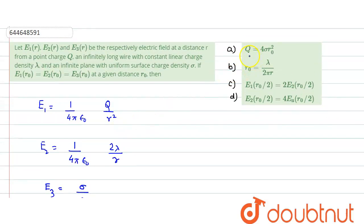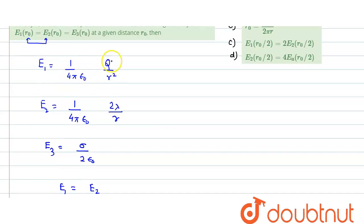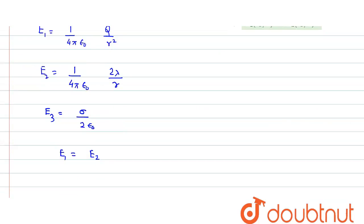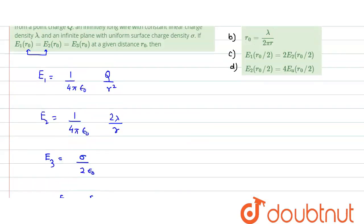First, we need to find a relationship between Q and other quantities. Equating E1 equals E2, the factor (1/4πε) cancels. So Q divided by r₀² equals 2λ divided by r₀. From this, we can say Q equals 2 times lambda times r₀.